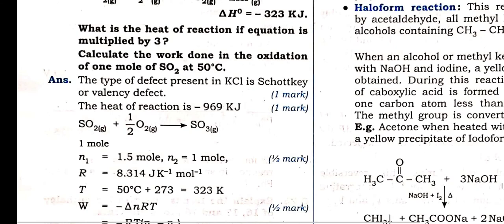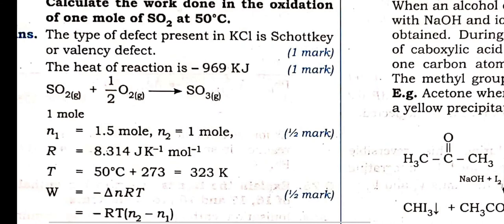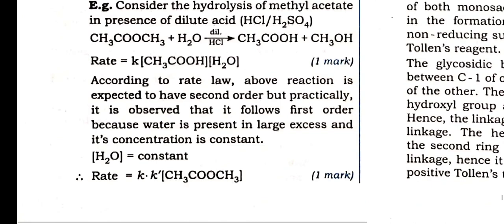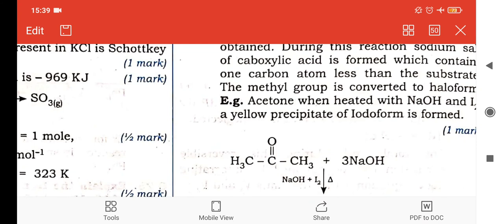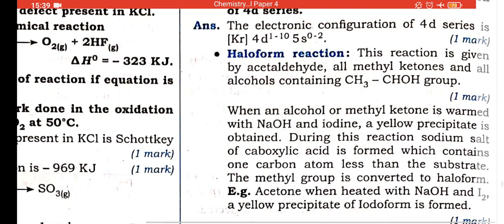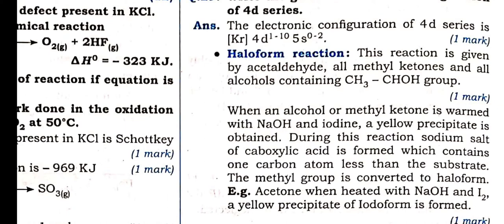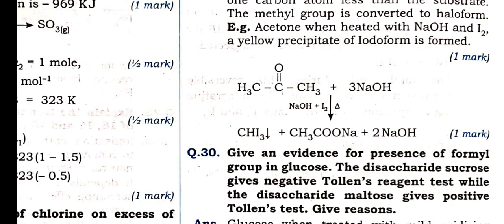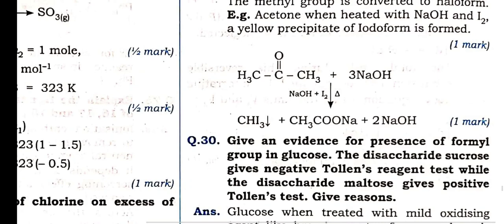What is the action of chlorine on ammonia? Pseudo first-order reaction: acid hydrolysis of methyl acetate — second order but behaves as first order, water concentration is constant. Electronic configuration of 4d series. Haloform reaction: this reaction is given by acetaldehyde, all methyl ketones, and alcohols which contain CH₃CHOH. Iodoform reaction: acetone reacts with sodium hydroxide and iodine — sodium acetate and chloroform (iodoform) is given out, sodium hydroxide as byproduct. This reaction is called iodoform — which contains methyl ketone and alcohol CH₃CHOH.